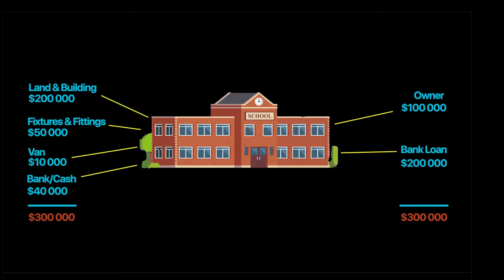To start this business, I had to finance it using my own money and take a loan from the bank. This summarizes something called an accounting equation. All these items — land and building, fixtures, van, and cash — are called assets. In the accounting world, assets are anything that the business has ownership over and that will help the business generate some future economic benefit.